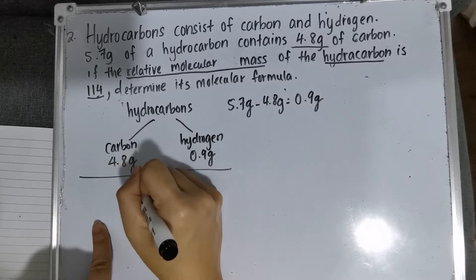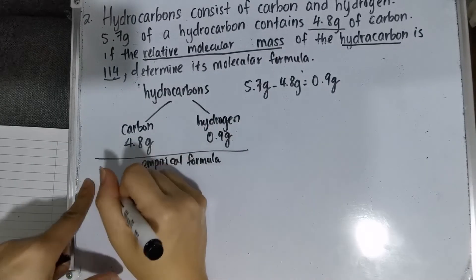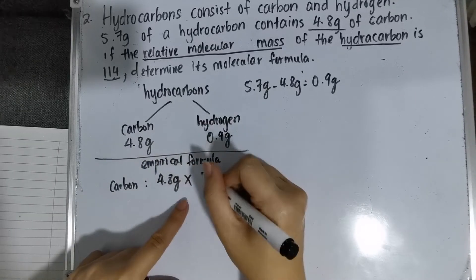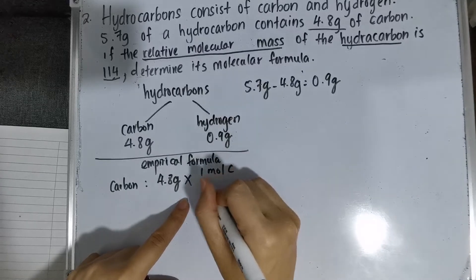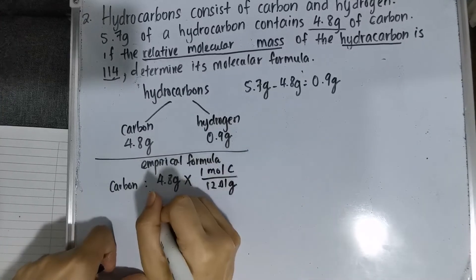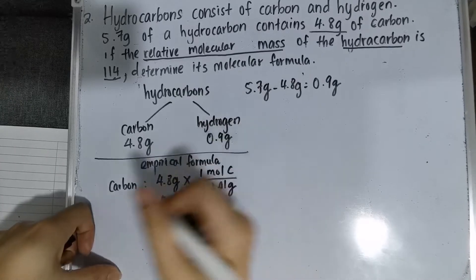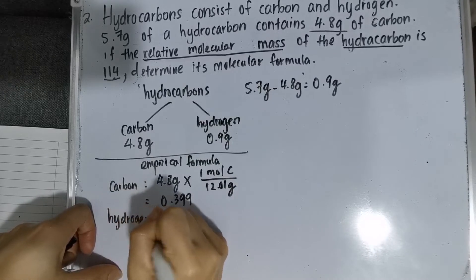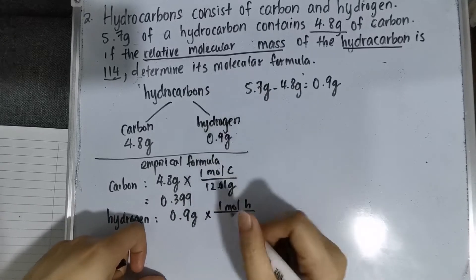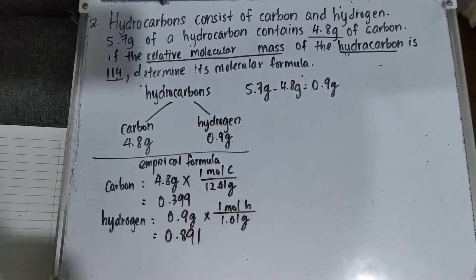Then we have to use your empirical formula. So for carbon, your carbon is 4.8 grams. You have to multiply by one mole of carbon over its molar mass. One mole of carbon is 12.01 grams, so when you divide, the total is 0.399. Next, for your hydrogen, your hydrogen is 0.9 grams times one mole of hydrogen. Hydrogen is 1.01 grams per mole, so the total is 0.891.